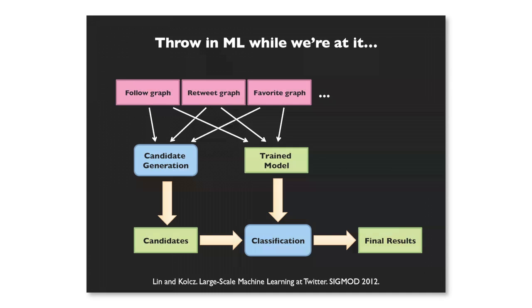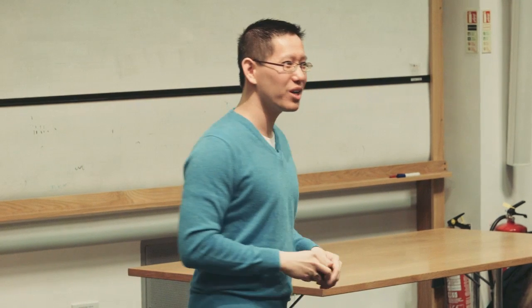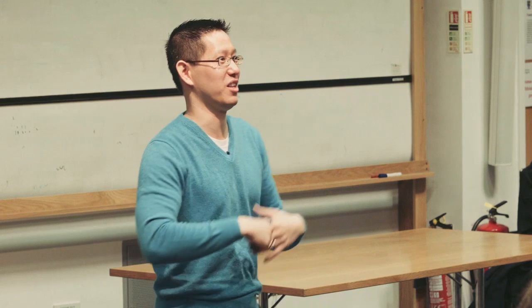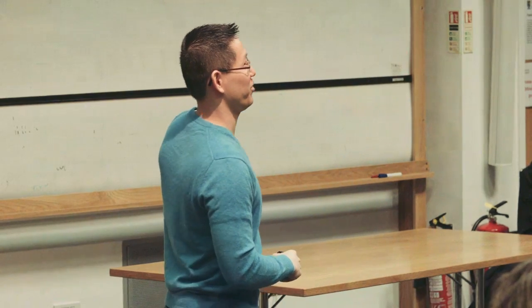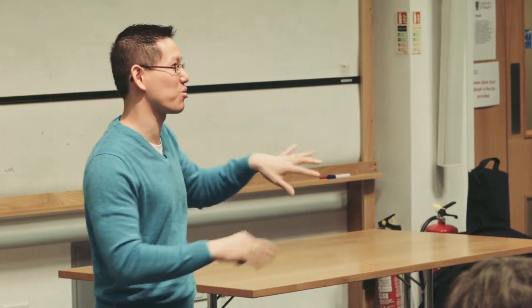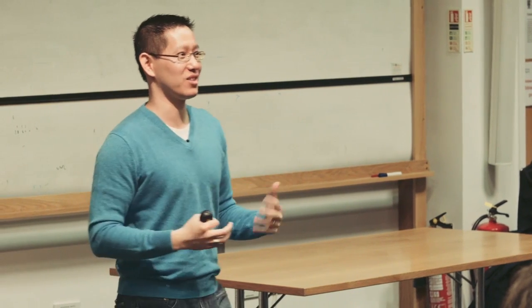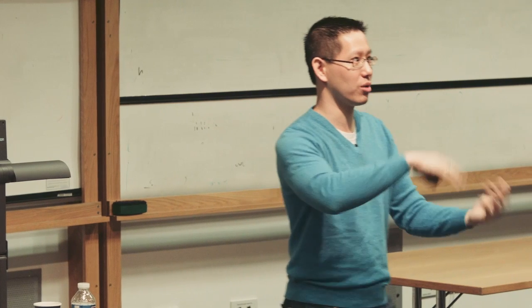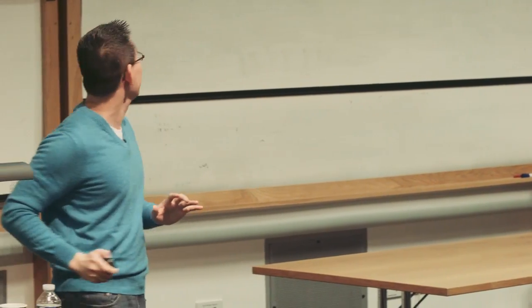Let me go back to this picture of a fairly simple and straightforward architecture — take all the data, generate candidates, train a model, do classification. You guys read PhD Comics? This is one of my favorites. There's the scientific method — what you're supposed to do: formulate hypotheses, test them, modify them. But of course, this is not what we actually do. The idealized vision of a data scientist: approach a problem, extract features, develop some cool ML technique, and you're done. Profit.